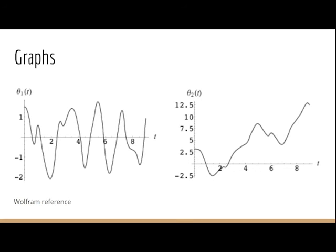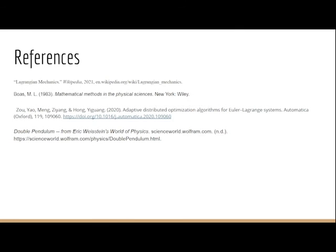Once we have both of them, we could graph them. As we can see by my graphs, the first angle is determined and we can kind of predict the path that it might take, and so does the second angle. We can see that the first theta is more controlled while the second one is a bit more unpredictable. That's it for my project. Here are my references, and thanks for listening.